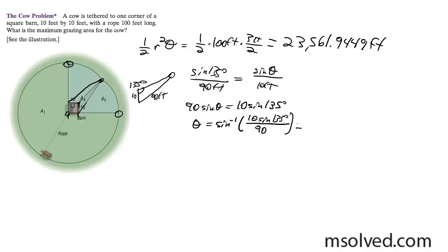You end up with sine, actually, I'll just do this. Theta is equal to arcsine of 10 sine of 135 over 90, which ends up giving me 4.506 degrees, roughly 4.5 degrees.